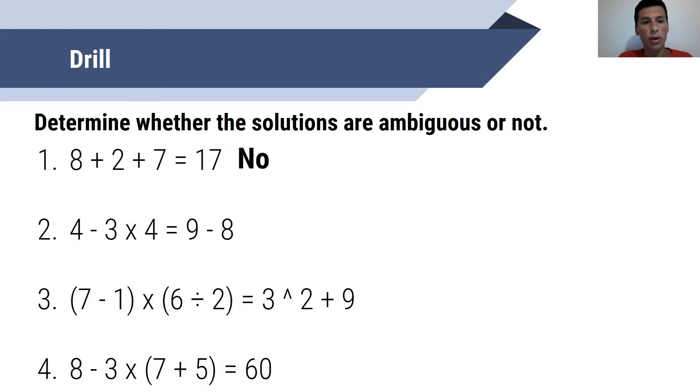For the second question, there is ambiguity. If I want to interpret the solution this way, 4 minus in parentheses 3 times 4, that is not equal to 1.